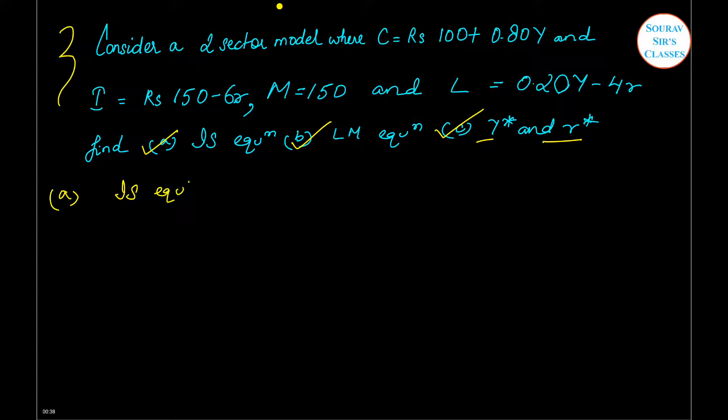IS equation shows the inverse relationship between Y and r, so it is Y equals C plus I plus G. This is the equilibrium condition. Now let us substitute the values: 100 plus 0.80Y plus 150 minus 6r plus 0. Then we have 0.20Y plus 250 minus 6r, which is the IS equation.